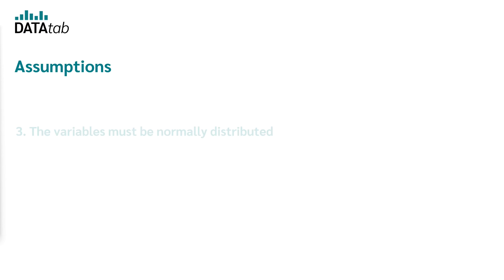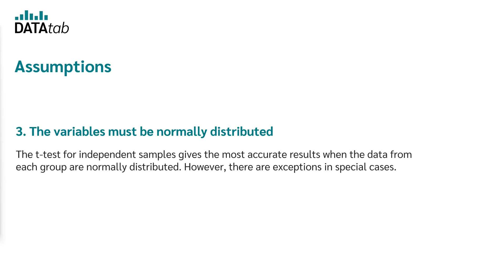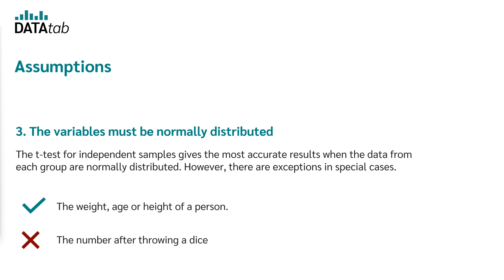The third assumption is that the variables must be normally distributed. The t-test for independent samples gives the most accurate results when the data from each group are normally distributed, though there are exceptions in special cases. For example, the weight, age, or height of a person could be normally distributed. But the result after throwing a dice is not normally distributed.